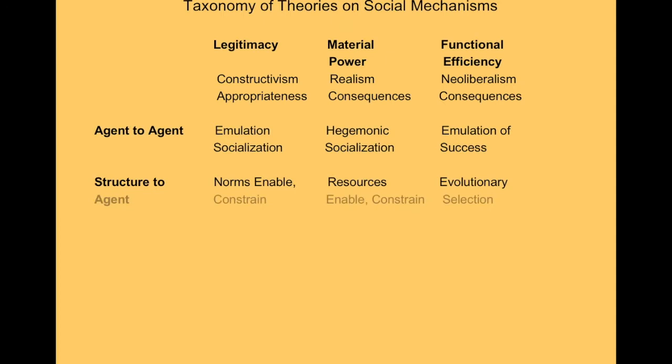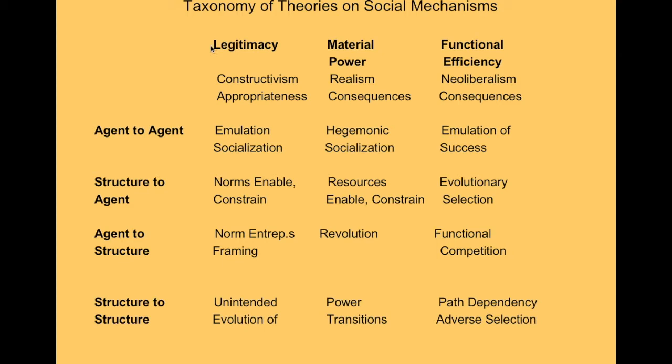I've also introduced a taxonomy of theories on social mechanisms. Thinking of the vertical axes — legitimacy, material power, and functional efficiency — and the horizontal rows of agent-to-agent, structure-to-agent, agent-to-structure, and structure-to-structure mechanisms, we have 12 families of theory. You can ask yourself which of those might plausibly apply to your case. You may be able to set aside some quickly, but it's good to make sure you haven't left out a major approach to social explanation.